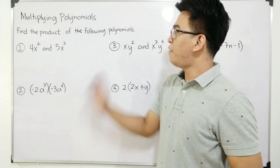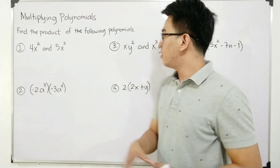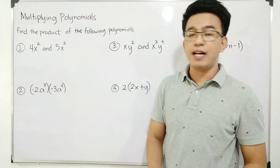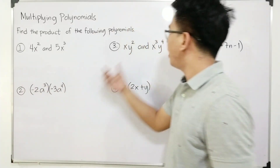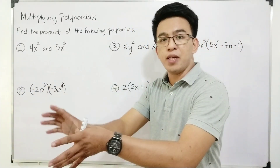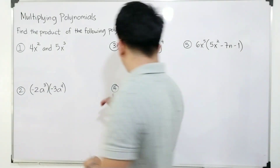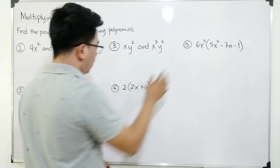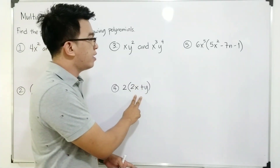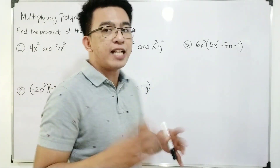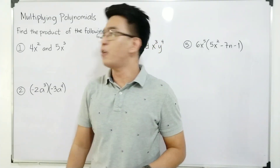And we are given the direction: find the product of the following polynomials. So in this first part of our video, I have five different examples. In numbers one, two, and three, we're actually multiplying monomial to another monomial. And for items four and five, we have a monomial to be multiplied by a binomial. And in the next part of our video, we'll multiply binomial to binomial. So let's start with number one.